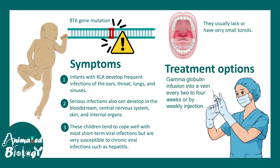For treatment, gamma globulin infusion through the vein is one way to treat this disease. On a weekly basis or once every two weeks, this kind of infusion — generally purified antibodies injected through the veins — has to be administered. Supportive medicines like antibiotics would also reduce the risk of bacterial infection.